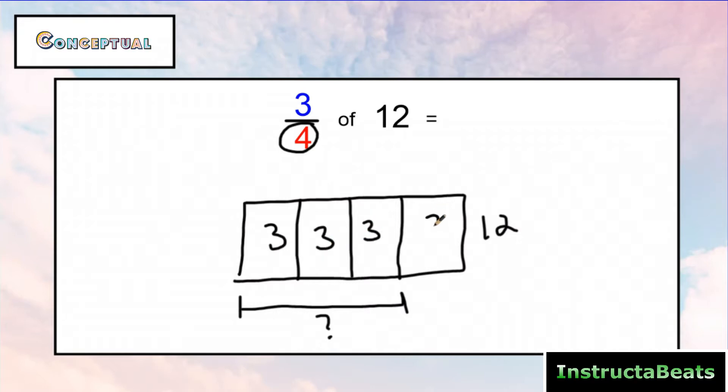So I'm going to have three in each group. And if I wanted three of those, I'm looking at how many do I have in these three groups, which of course would be nine. So three-fourths of 12 is nine. And we solved it with a tape diagram, or some people call it a bar model.